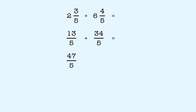Now rewrite the fraction to simplest terms. 47 fifths becomes 9 and 2 fifths. So 2 and 3 fifths plus 6 and 4 fifths is equal to 9 and 2 fifths.